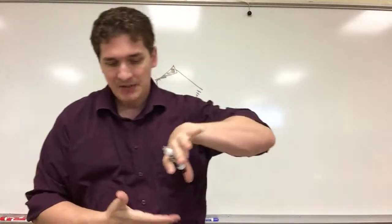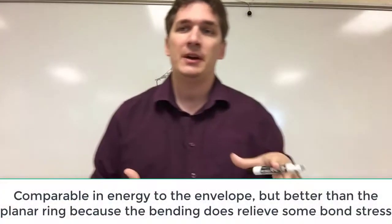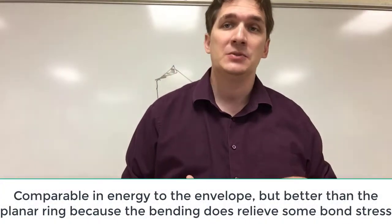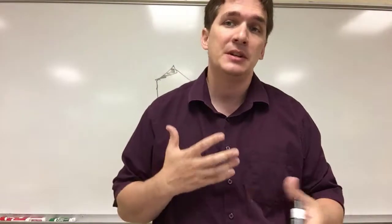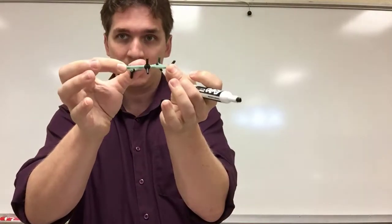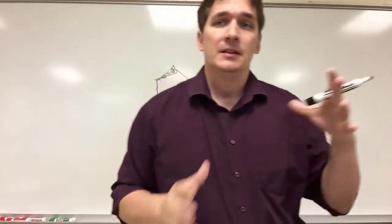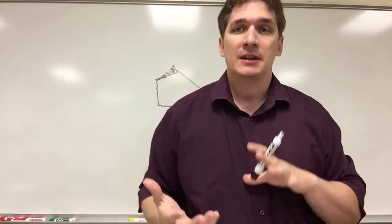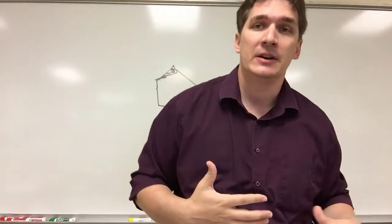Now, the half chair and the envelope are the two that are the more stable ones. So typically, it's going to want to exist in these two conformations, although it does occasionally, passing between the two, go through your planar conformation. So this is cyclopropane, cyclopentane. Let's talk about cyclohexane next.